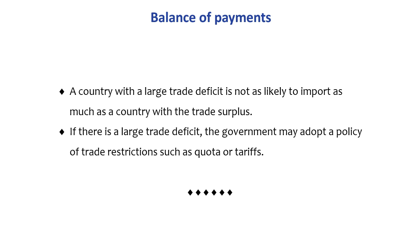To summarize: the three major components according to the IMF are the current account, capital account, and financial account, though countries like India include the financial account within the capital account. Other key concepts covered include trade deficit, trade surplus, accommodating transactions, autonomous transactions, errors and omissions, and the significance of balance of payments.